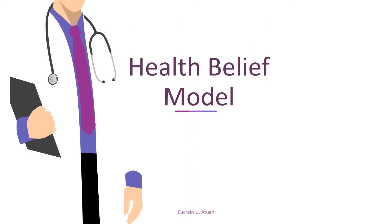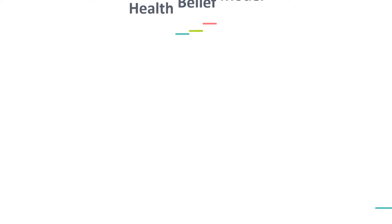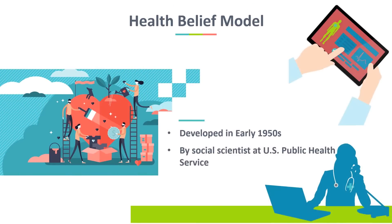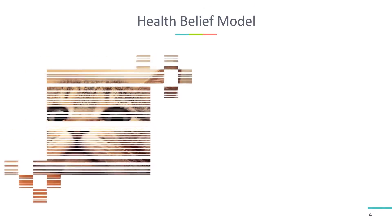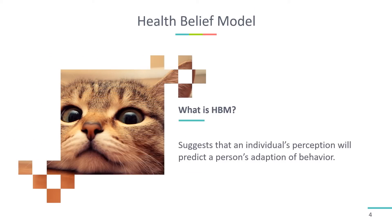The Health Belief Model was developed in the early 1950s by social scientists at the U.S. Public Health Service in order to understand the failure of the people to adopt disease prevention strategies or screening tests for the early detection of disease. The Health Belief Model suggests that a person's belief in a personal threat of an illness or disease, together with a person's belief in the effectiveness of the recommended health behavior or action, will predict the likelihood the person will adopt the behavior.